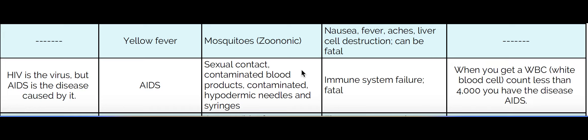With HIV, you can be HIV positive, and over a span of time you are going to end up with a white blood count lower than 4,000. At that point, you have AIDS.